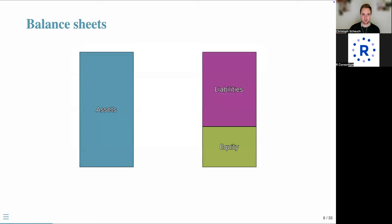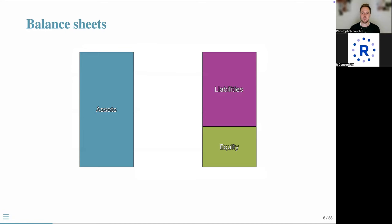The balance sheet provides a snapshot of a company's financial standing at a specific point in time — filed quarterly or annually. It shows the company's assets, liabilities, and shareholders' equity, according to the fundamental accounting equation: assets equal the sum of liabilities and shareholders' equity. Assets are resources owned by the company expected to provide future economic benefits. Liabilities are obligations owed to external parties, and shareholders' equity is the residual interest in assets after deducting all liabilities.